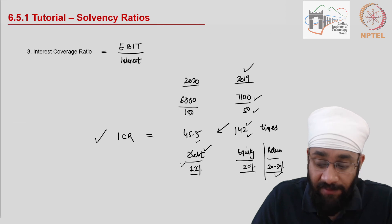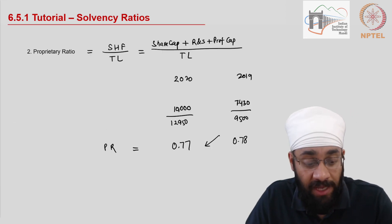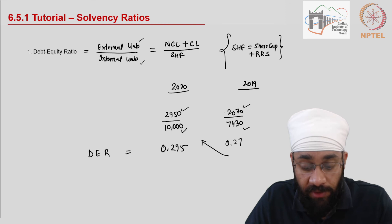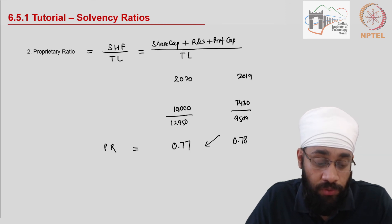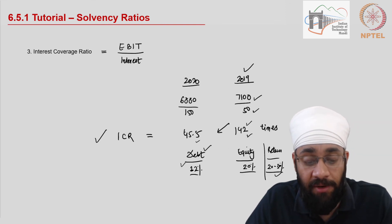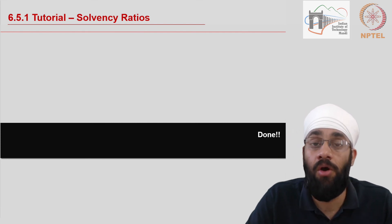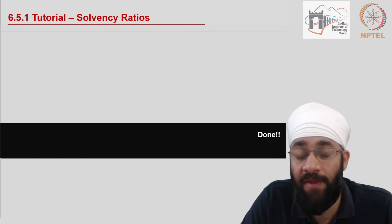So in this video we have looked at the calculation of three ratios. We looked at debt to equity ratio, then proprietary ratio and interest coverage ratio. These three ratios indicate the long term financial position of the business. I'll see you in the next video.